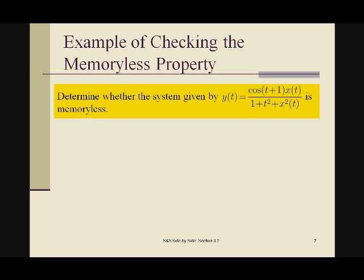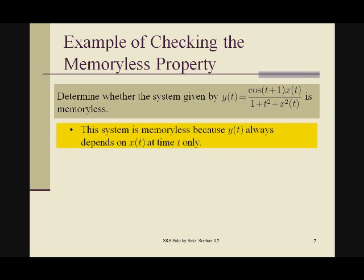The answer is the system actually is memoryless because y(t) always depends on x(t) at time t only. You can see x(t) right there, and x(t) is squared right there, but they both are x(t)—they're the present.